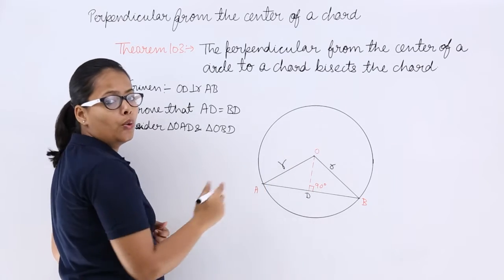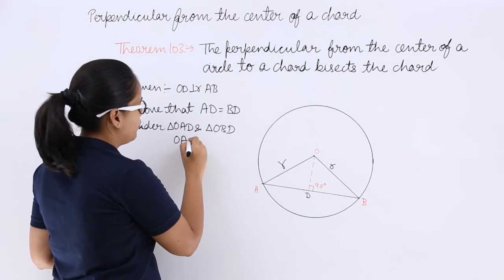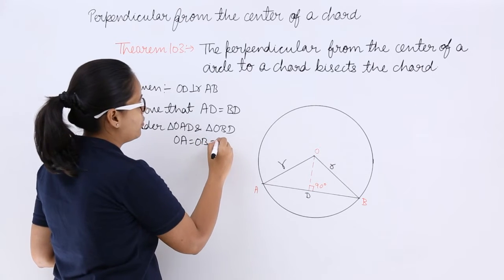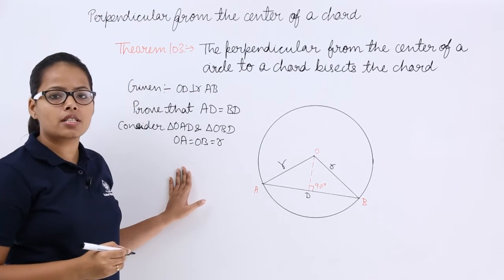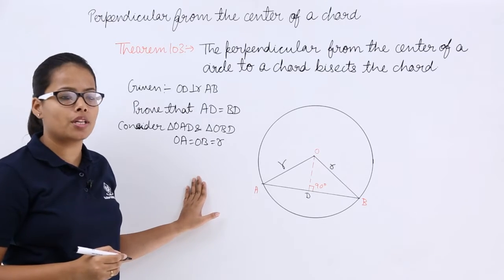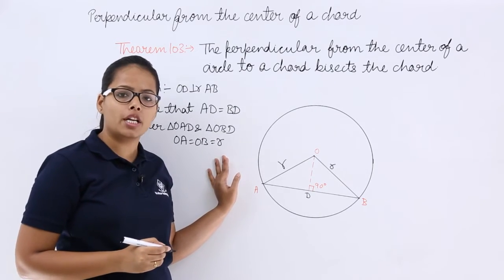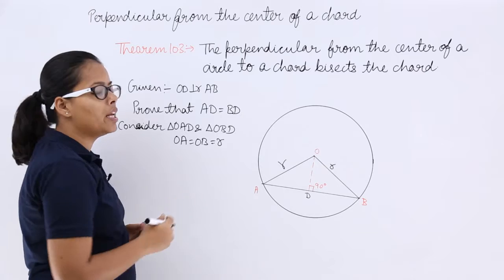OA is equal to OB because this is the fixed distance from the fixed point of a circle to a point on the circle, which is equal to the radius of this circle.